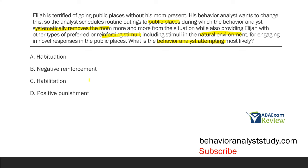Habilitation occurs when a person's repertoire or skill set changes so that they start contacting reinforcement more and they start contacting punishment less — exactly what the analyst is attempting to do. They're attempting to change Elijah's repertoire in public places so that Elijah is contacting reinforcement more in this natural environment for engaging in novel responses. What about D, positive punishment? It doesn't mention punishment. It seems to be a reinforcement-based approach, which is great. Specifically, the analyst is attempting to get Elijah to change behavior so they're contacting natural reinforcement more and more.